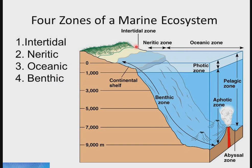The intertidal zone falls between the high tide level and the lower tide level. It is submerged in water at high tide and exposed to the environment at low tide, so temperature fluctuates in this zone. This zone enjoys an abundance of sunlight, hence there is high photosynthetic activity here.